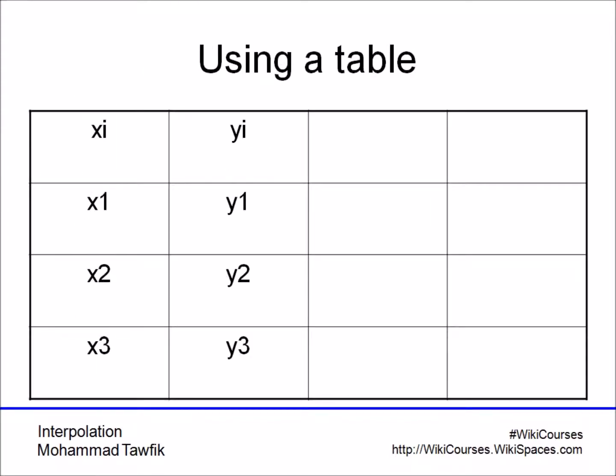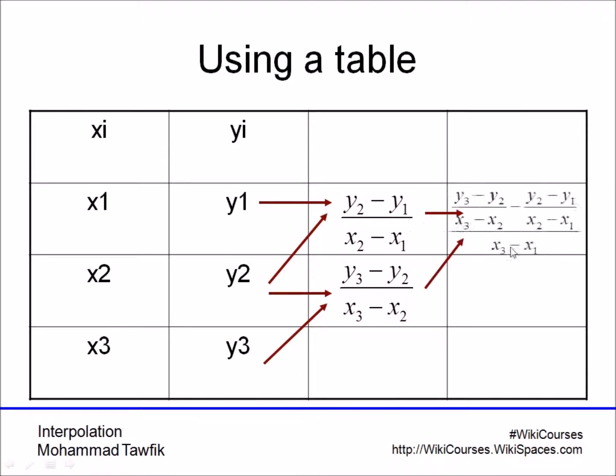Now you have those three coefficients. You can obtain them using a table. If you set your numbers in two columns, x and y, then you start by using the first two y's and the first two x's to get the slope of the first line. Then use the other two to get the slope of the second line.